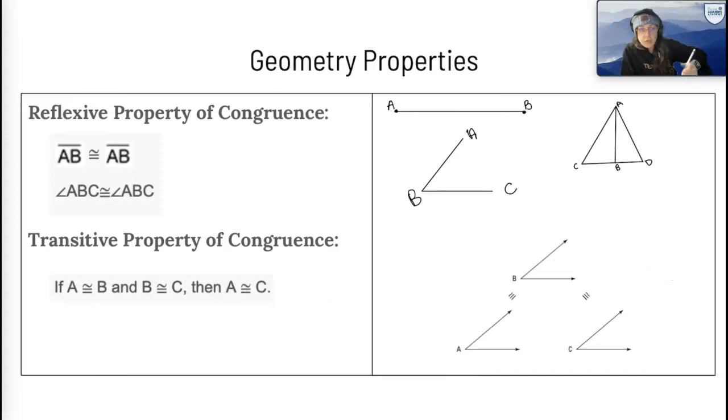So the first one is the reflexive property of congruence. What's the reflexive property of congruence? It says if something is something, it is something. So segment AB is congruent to segment AB. Angle ABC is congruent to angle ABC.